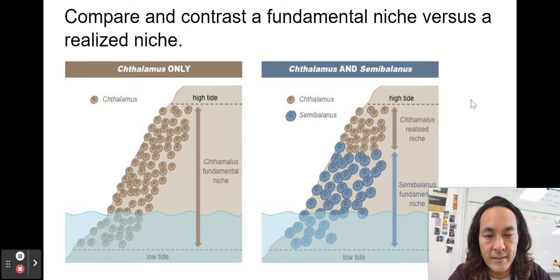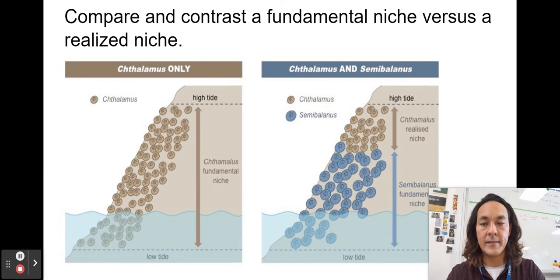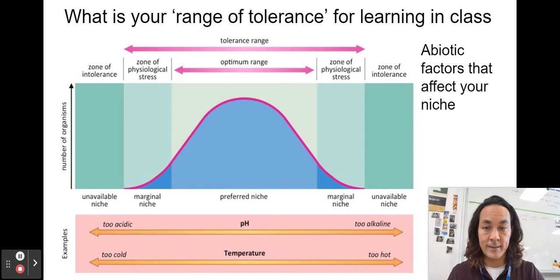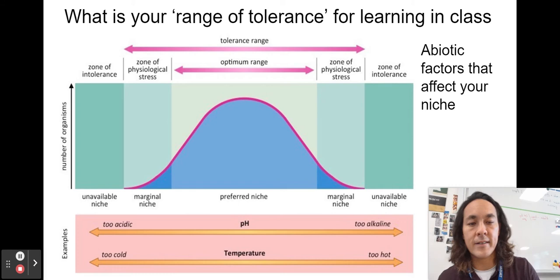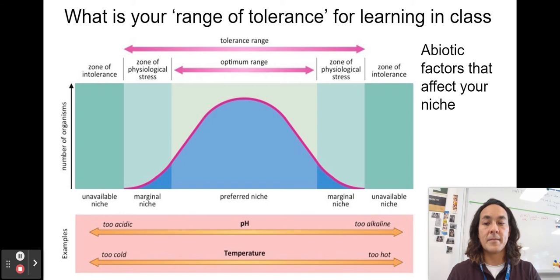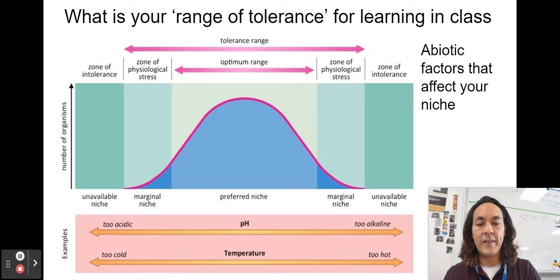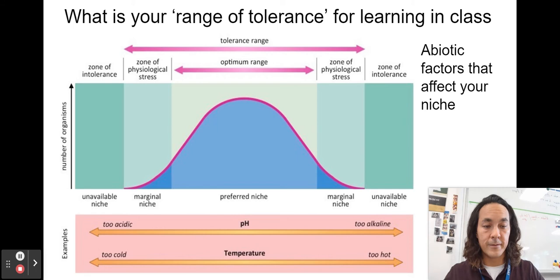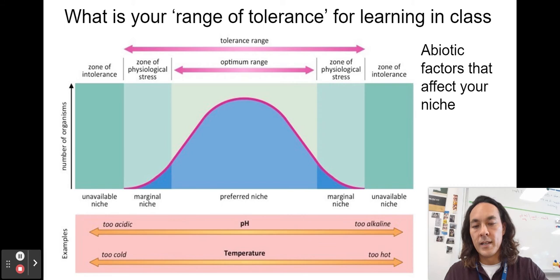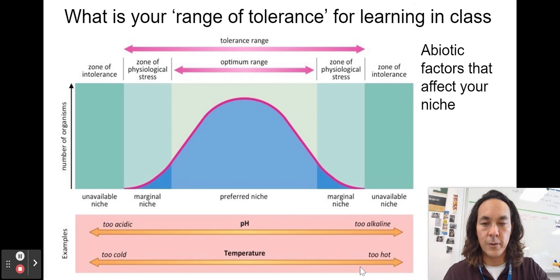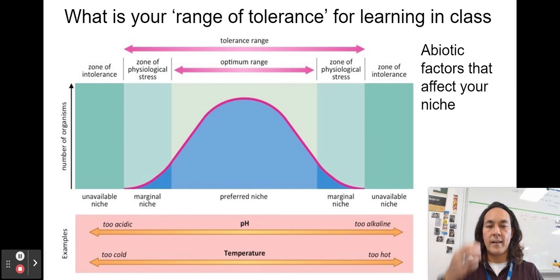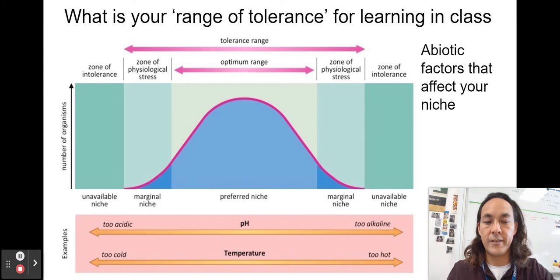When realized niches are shrunk by human activity or encroachment by other organisms, that species could face extinction pressures. The range of tolerance refers to abiotic factors affecting your niche. Our classroom has been too hot for COVID safety — if it's too hot or too cold you can't learn. Same for fish: if water is too acidic, too alkaline, too cold, or too hot, they can't survive. There's an optimum range, and these abiotic factors affect what fundamental niche an organism can occupy.